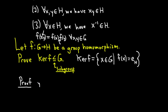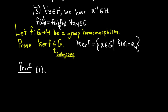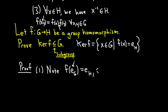Proof. We'll number the conditions as before. For the first condition, we need to show the identity element is in the kernel. Note that F of the identity element in G equals the identity element in H, because F is a group homomorphism — this does require proof, but by this point you've typically already proven it. So e_G gets mapped to e_H, which is precisely what it means for e_G to be in the kernel of F. That takes care of the first condition.